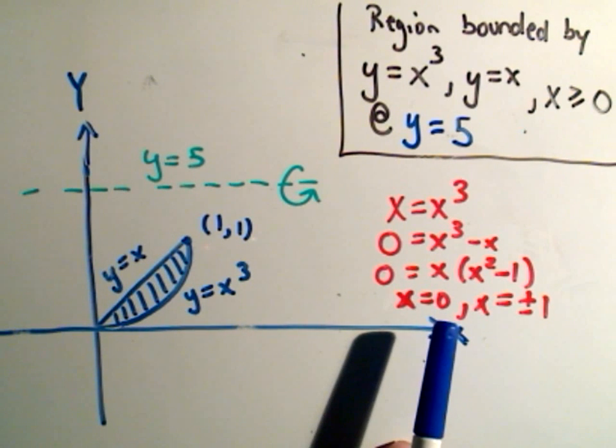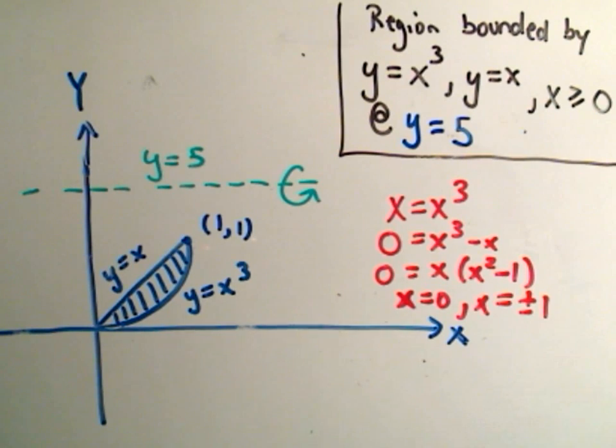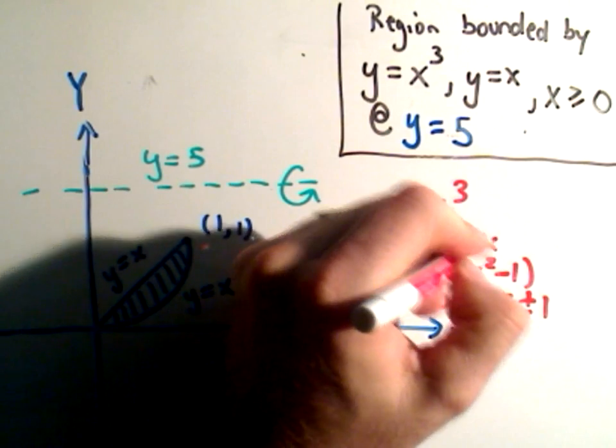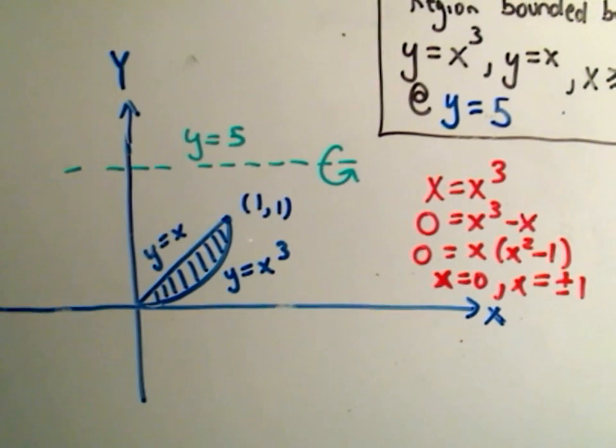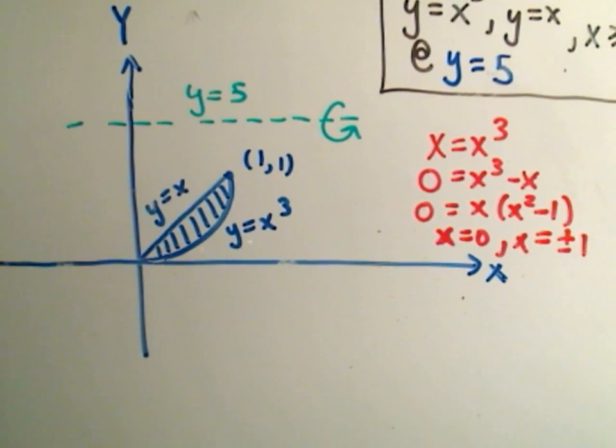You can find the limits of integration, the points of intersection, by setting them equal to each other. So that's what I did over here off to the side. And this was explained in part one. And now, again, we just want to integrate, we want to rotate this region about the line y equals 5.